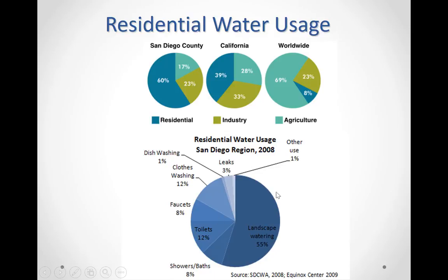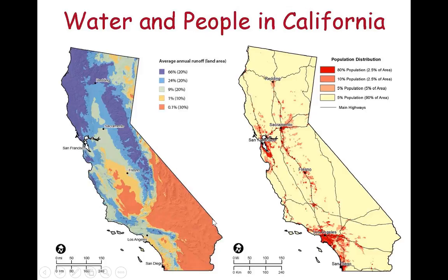Here is how residential water use in San Diego County is divided: a big chunk is used for landscaping, and the remaining for other household purposes. For California overall, the water cycle provides more water in the northern part of the state because of increased precipitation and snowmelt.